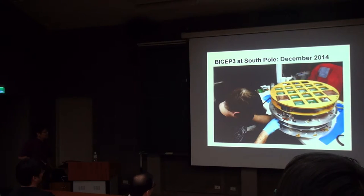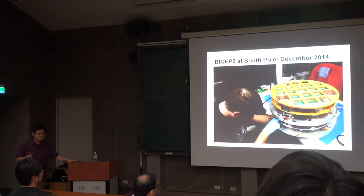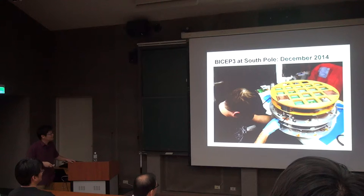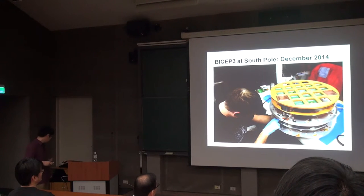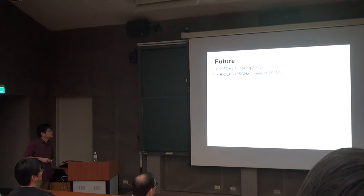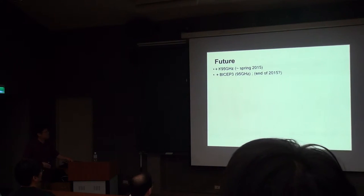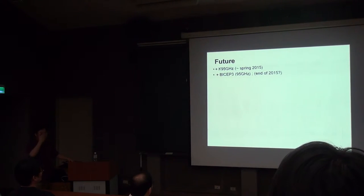This is the focal plane mass you have to cool to 0.25 K with a window bigger than this. We're going to populate all of this with detectors — the first year we had nine tiles; next year we're going to populate the rest, all at 95 GHz.